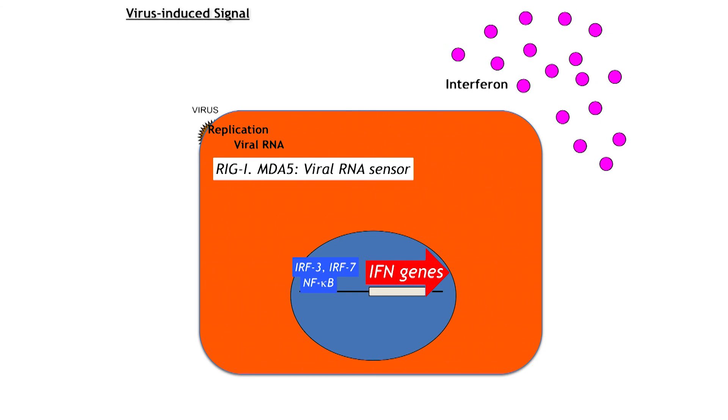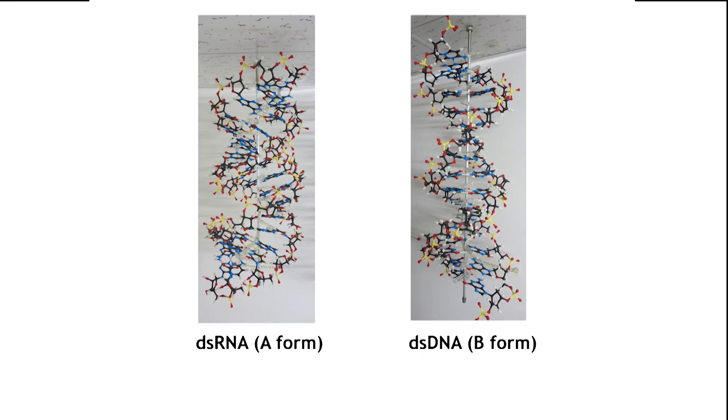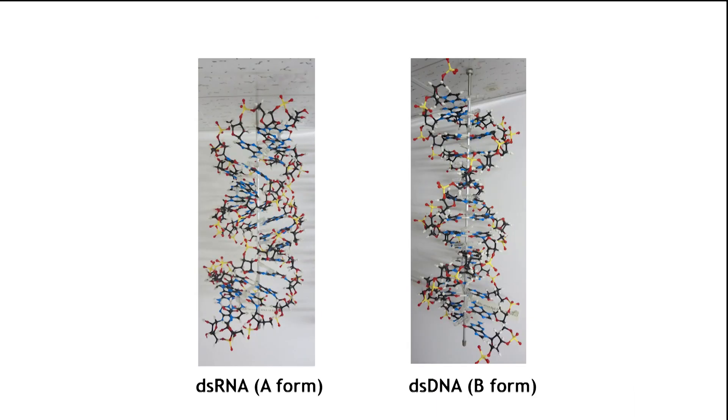Sensing pathogen-related molecules and the activation of the anti-pathogen reaction is collectively termed innate immunity. It is critical to discriminate viral RNA from cellular RNA. Viruses produce double-stranded RNA during replication, and this double-stranded RNA structure is sensed as viral RNA. Double-stranded RNA forms an A-form double helix, whereas the structure of double-stranded DNA is in B-form. Therefore, viral RNA sensors do not sense DNA.